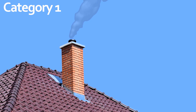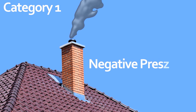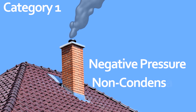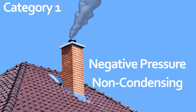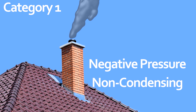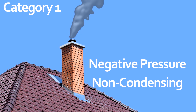A chimney is what we normally think of when we think category one. Negative pressure sucks the products of combustion from the appliance breach and deposits them outdoors. The temperature is high enough to avoid condensation in the vent, which means it's non-condensing.